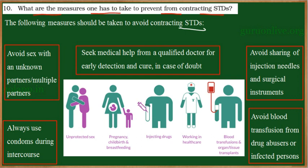These diseases can be prevented majorly by avoiding sex with unknown partners or multiple partners, or by avoiding unprotected sex — that is, using condoms during intercourse. By these two methods, the spreading of the disease can be stopped.